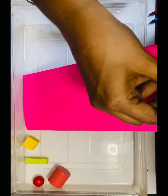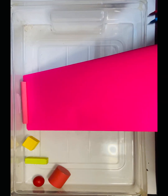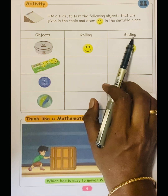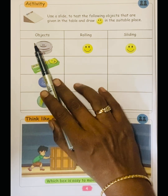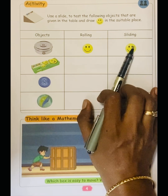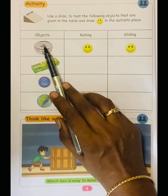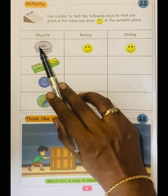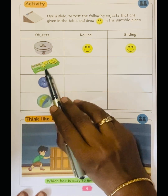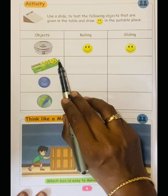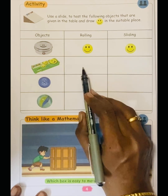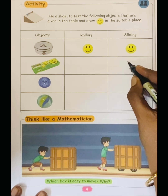Let's try more examples of rolling and sliding objects. See, it looks like a tiffin box — it is rolling and sliding. On this side it is curved and this side is flat. Next one is a pencil box. All the sides are flat, so it is only sliding — rolling is not going to happen.